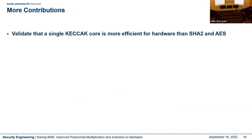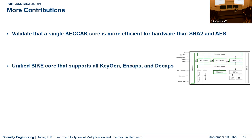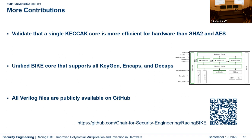The paper contains additional contributions: for the first time we validated that a single KECCAK core is more efficient in hardware than SHA-2 and AES combined. Based on that observation, the BIKE specification was changed — BIKE is now also defined using KECCAK. We also present a unified BIKE core containing all three operations — key generation, encapsulation, and decapsulation — controllable via a nice interface, with all HDL files publicly available on GitHub.